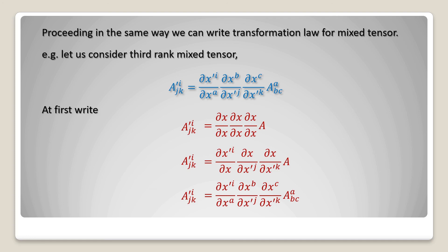So small a will go in the denominator and bc will go in the numerator. This is the transformation law for the third rank mixed tensor.